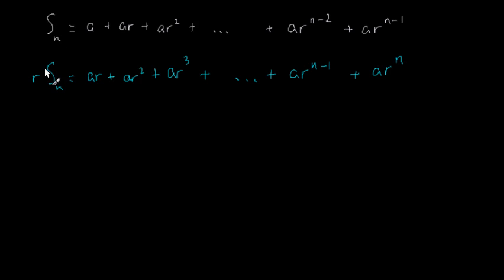So if I take this minus this, I'll get Sn minus r times Sn, and when I take this minus this, that looks quite complicated, lots of terms to subtract, but notice that I have ar here and ar here. Notice that many of these terms are common.